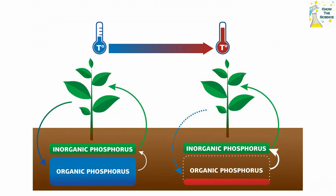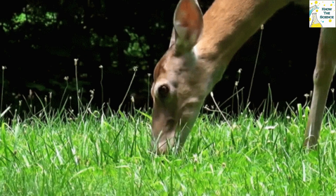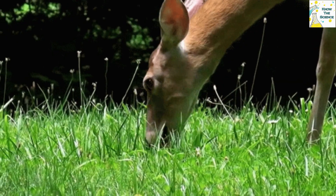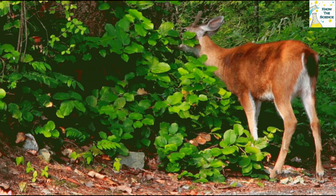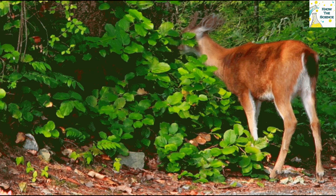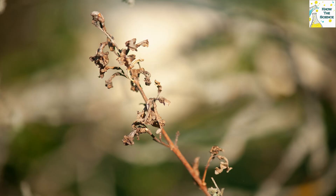This inorganic phosphate is then distributed in soils and water. Plants take up inorganic phosphate from the soil. The plants may then be consumed by animals. Once in the plant or animal, the phosphate is incorporated into organic molecules such as DNA.